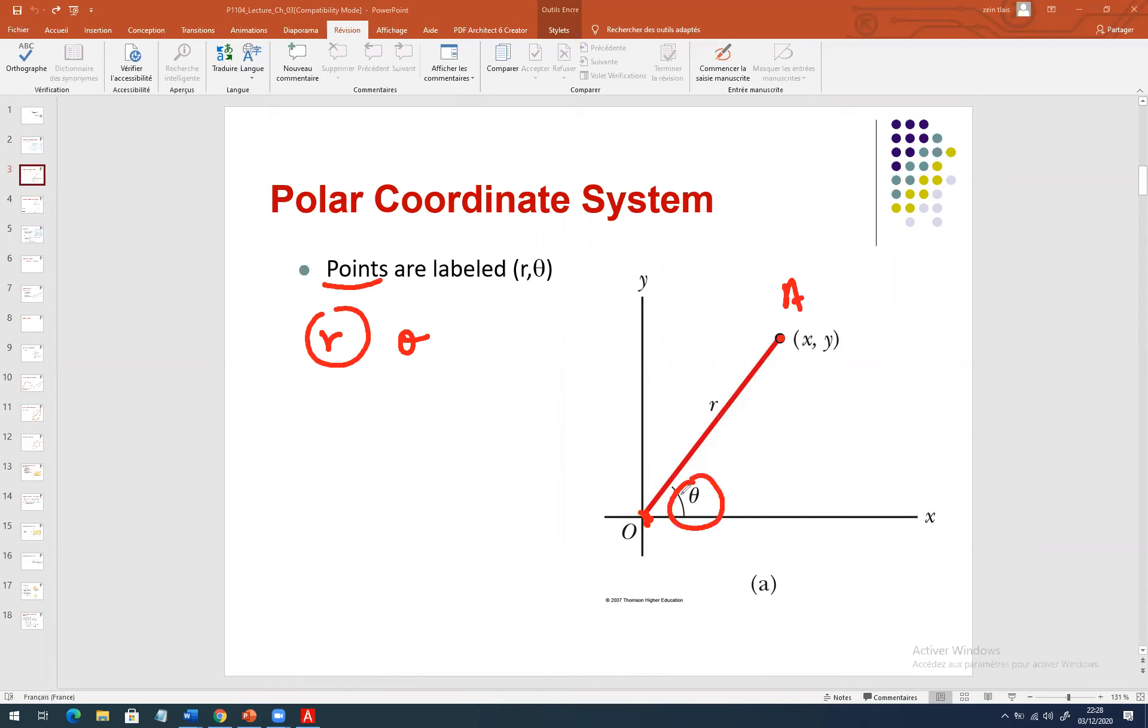The angle theta is the angle between r and the x-axis. So, the two coordinates are r, theta, the polar coordinates, and we have x, y, the Cartesian coordinates.